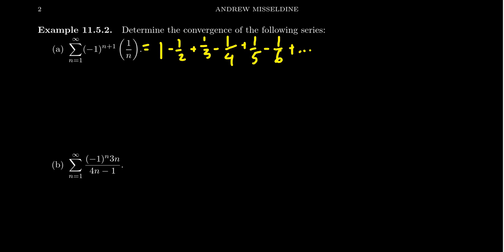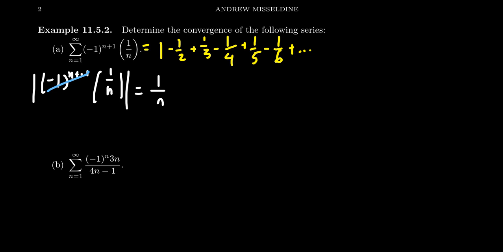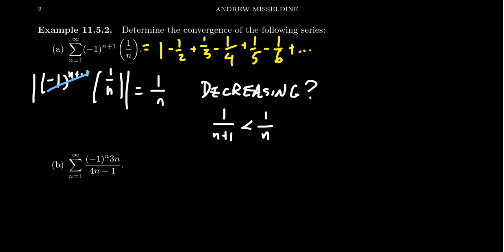Despite the fact that the harmonic series is divergent, if we take the absolute value and ignore the alternating factor, we're left with just the sequence 1 over n. Does this sequence decrease? Yes, because if you consider 1 over n+1 compared to 1 over n, making the denominator bigger makes the fraction smaller. So 1 over n+1 is smaller than 1 over n — this is a decreasing sequence.